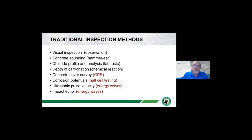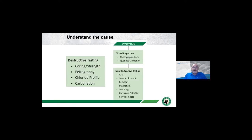There are a number of traditional inspection methods: visual inspections, sounding, and lab testing for full evaluation. This afternoon we want to concentrate on ground penetrating radar, half-cell potential testing, and how energy waves propagate through different materials. We want to understand the cause of deterioration—not just rush into a repair strategy—making sure we target our repair efforts to mitigate the deterioration in the future.